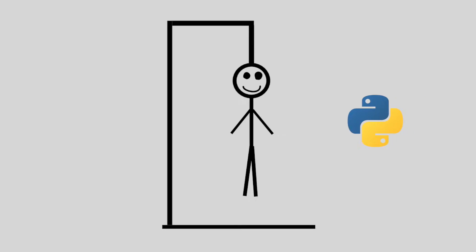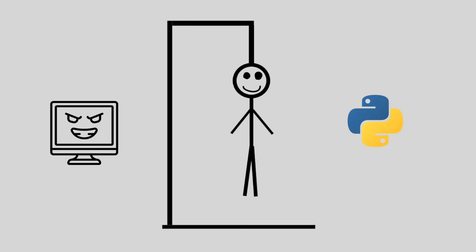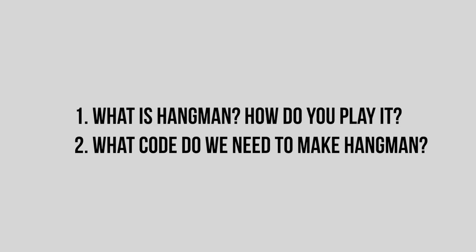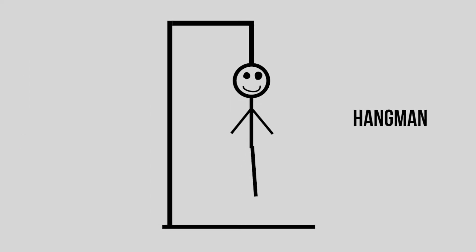In this video we make hangman in Python where the computer picks the words. But before we immediately jump into the code, I want to go over two quick things: number one, what is hangman and how is it played; number two, what code do we need to make hangman. Knowing both of these things before you start is important — when programming something you should always know what you're trying to achieve.